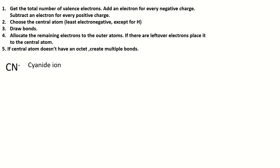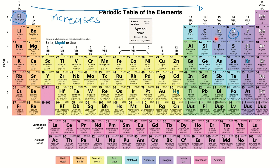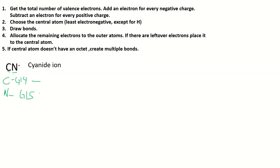Next: the cyanide ion. Same process — get the total number of valence electrons. Identify the group number of carbon and nitrogen. Carbon is in group 14 and nitrogen is in group 15. Carbon has 4 valence electrons and nitrogen has 5 valence electrons. Adding them together: 4 plus 5 gives us 9 valence electrons total.